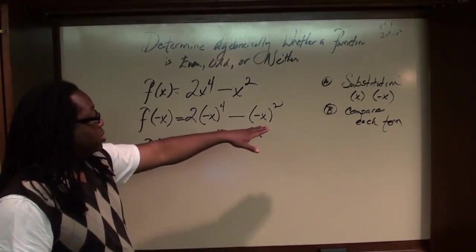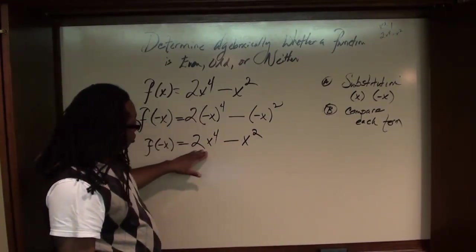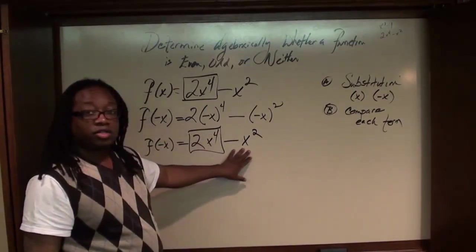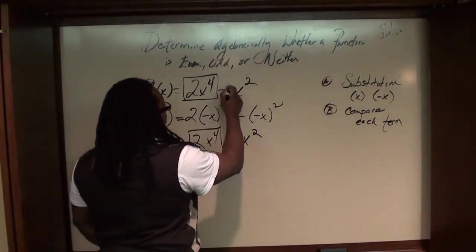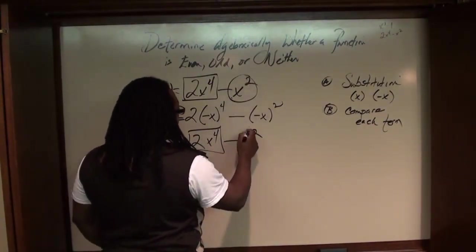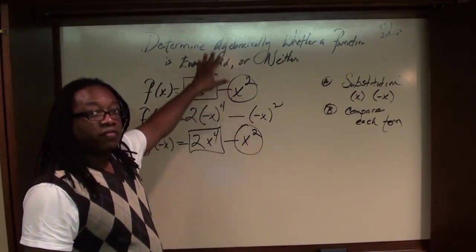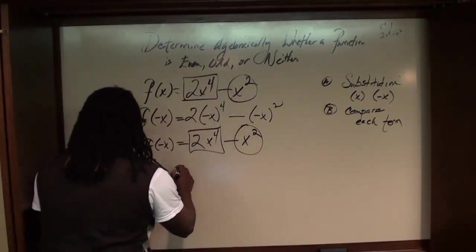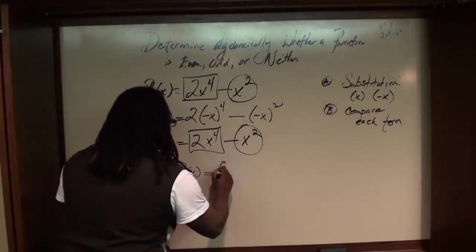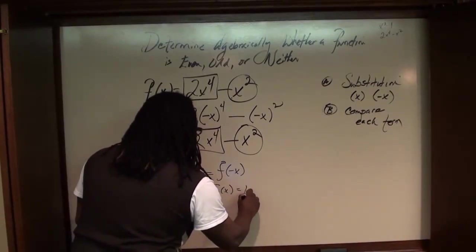Now let's compare each term. 2x to the 4th power equals 2x to the 4th power — these terms are the same. And negative x squared equals negative x squared — so our terms are the same. Since all terms are the same, the function is even. Therefore, f(x) equals f(-x), which means the function is even.